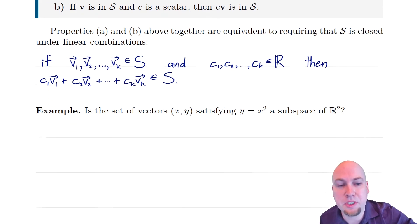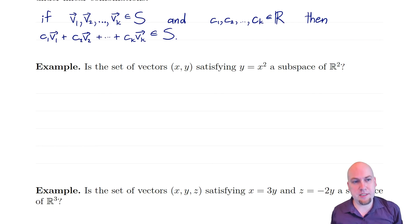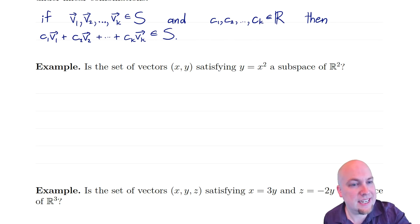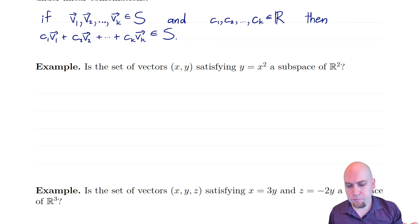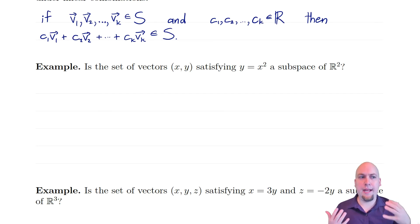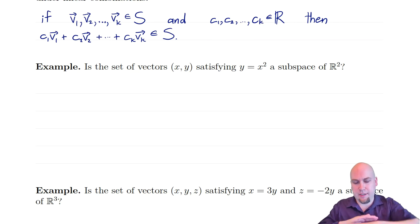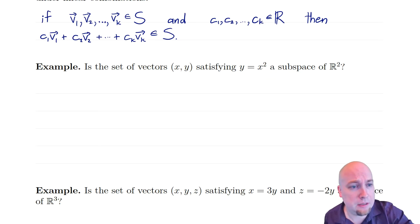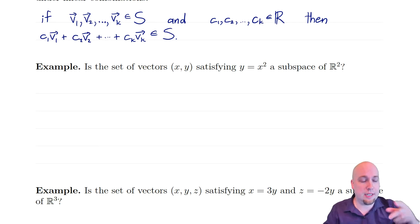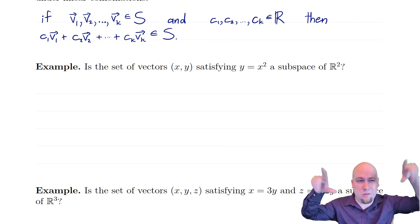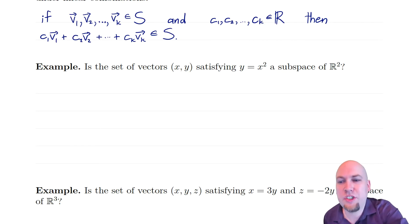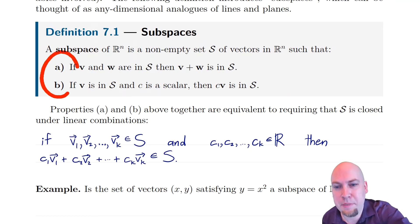Let's go through a couple examples of sets that are and are not subspaces. The first example is the set of all vectors in R2 where the second entry is the square of the first entry. Is that a subspace? Hopefully your intuition is telling you no — that set looks like a parabola (y = x²), which is not flat. So one of the two defining properties, either property A or property B, is going to fail.